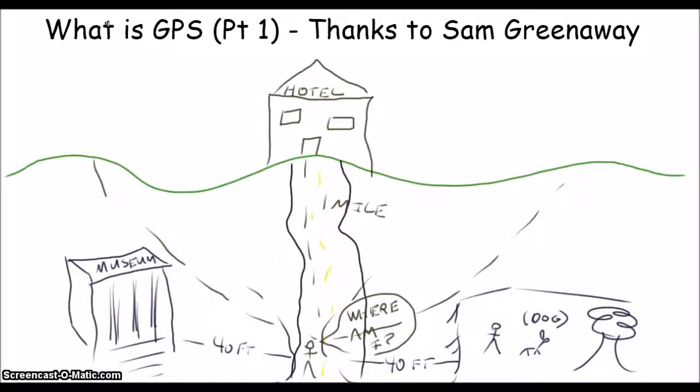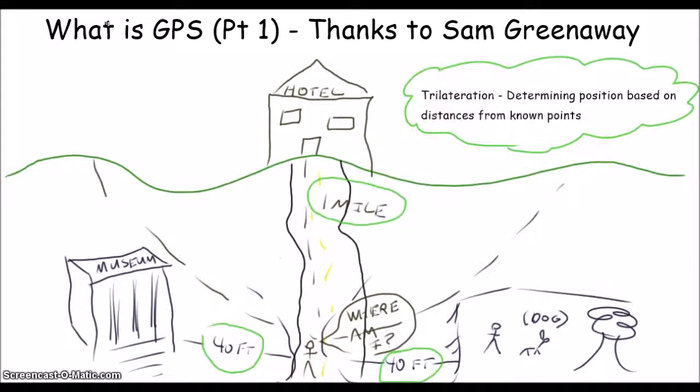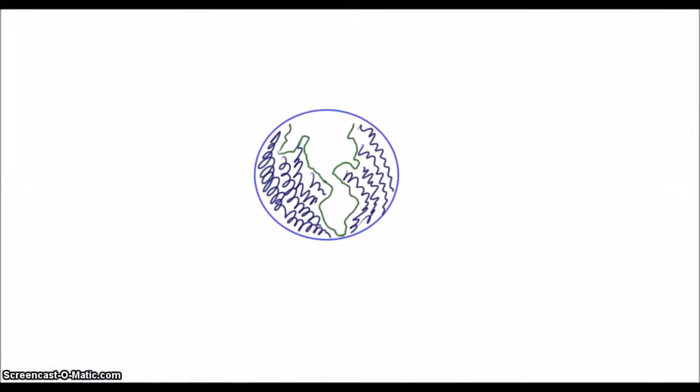What you are intuitively doing is called trilateration, or determining your position based off of distances from known points. GPS, or Global Positioning System, works in just about the same way.